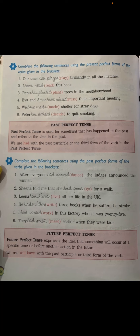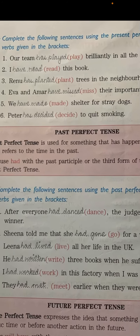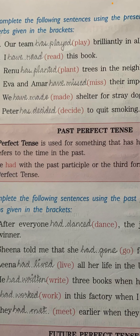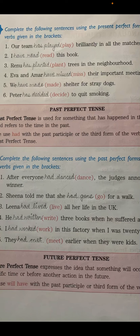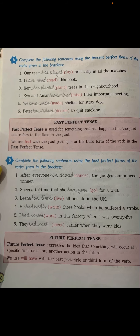Number three: 'Renu' is a singular noun, so we use 'has'. Plant's third form is 'planted' — 'Renu has planted trees in the neighborhood.' Number four: 'Eva and Amar' — with 'and', two singular nouns become plural, so we use 'have.' Eva and Amar have made shelter for stray dogs.